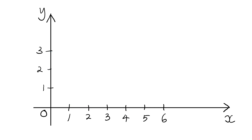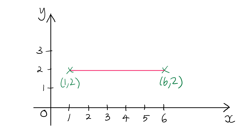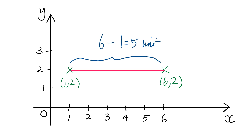Supposing I have two points. The first point is (1, 2) and the second point is (6, 2). If I join these two points with a horizontal line, would you be able to find the length of this line segment? Yes, we are able to. That would be 6 minus 1, which gives you 5 units.